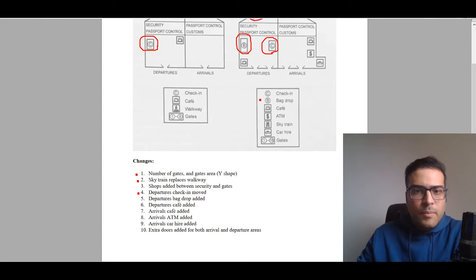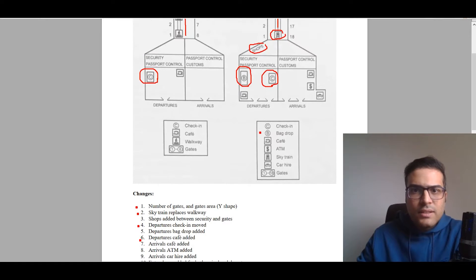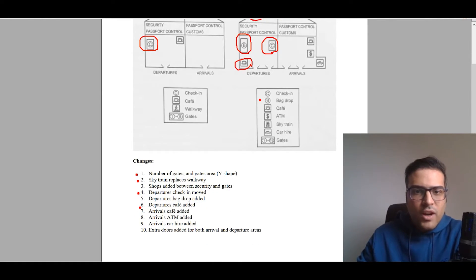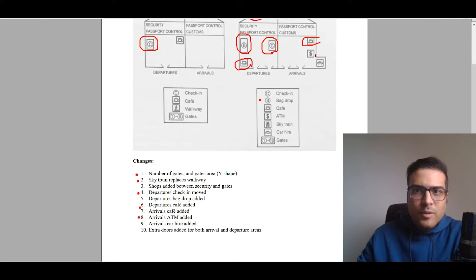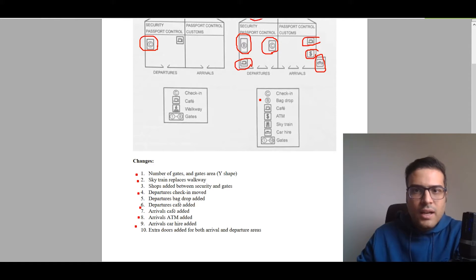The departure cafe will be added — something new. An arrival cafe will also be added. The arrival ATM will be added, and there will be a new car hire office. You can also note the extended area, and there will be extra doors compared to the previous map.